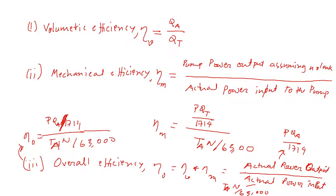In the SI system, the unit conversion constants do not exist, so it is simply P times Q divided by T times N. In that case, P is in newton per meter squared (pascals), Q is in meter cubed per second, T is in newton-meter, and N is in revolutions per minute. In the US system, P is in psi, Q is in gallons per minute, T is in pound-inch, and N is in revolutions per minute — and the conversion constants arise from using those regular units.